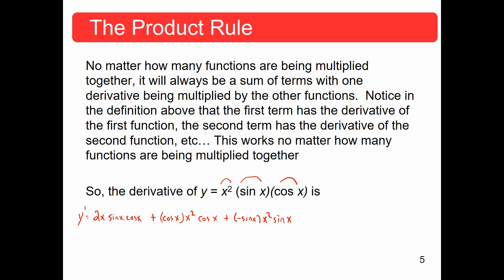So what do we wind up with? We get 2x·sin(x)·cos(x) + x²·cos(x)·cos(x) − x²·sin²(x). That's the first derivative. Notice we wind up with three terms because we had three functions.